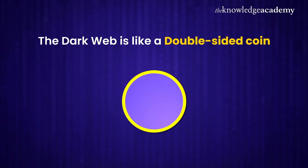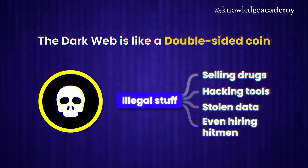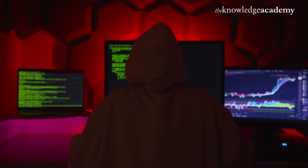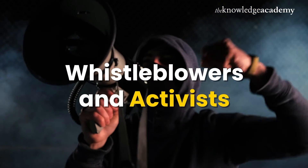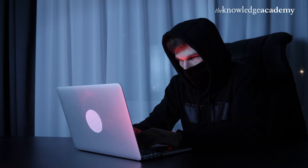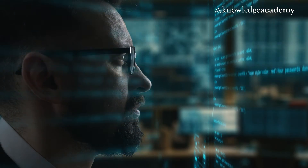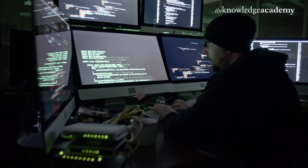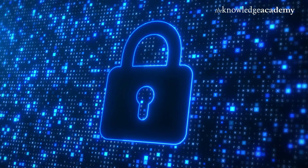Why do people use the Dark Web? The Dark Web is like a double-sided coin, showing two different faces. One side has a shady reputation because it's known for illegal activities — selling drugs, hacking tools, stolen data, and even hiring hitmen. Not everything on the Dark Web is bad, but its secret nature attracts some not-so-great people. The flip side is more positive. Some individuals use the Dark Web for good reasons, like whistleblowers and activists — individuals trying to make a positive change in tough places. They rely on the Dark Web's hidden corners to stay safe while revealing important information. It's a complex and mysterious digital world with two different faces. If you find yourself curious about the Dark Web, it's essential to exercise caution. Visiting it can expose you to potential risks, including malware, scams, and even legal consequences. Always prioritize your online safety and be aware of the potential dangers.